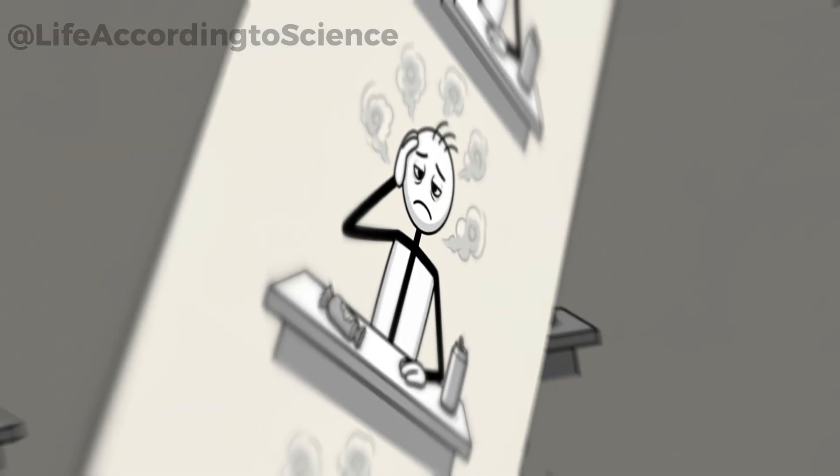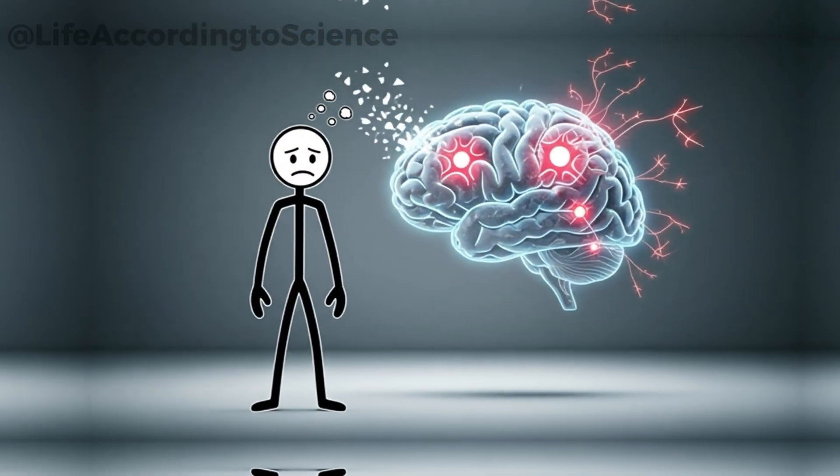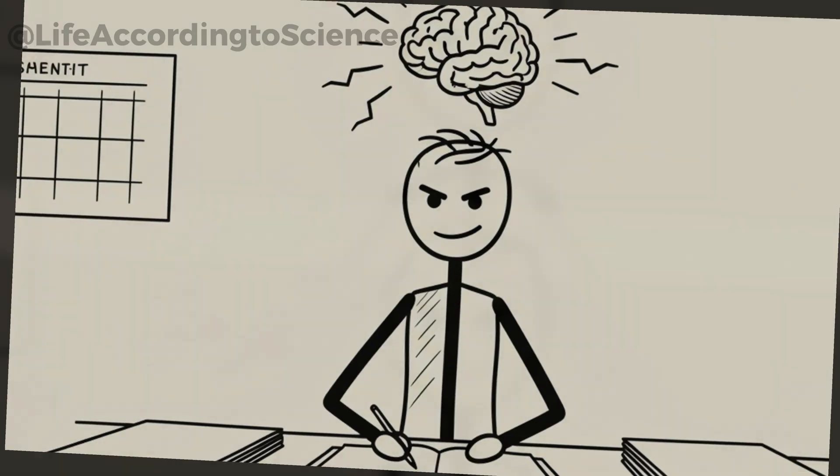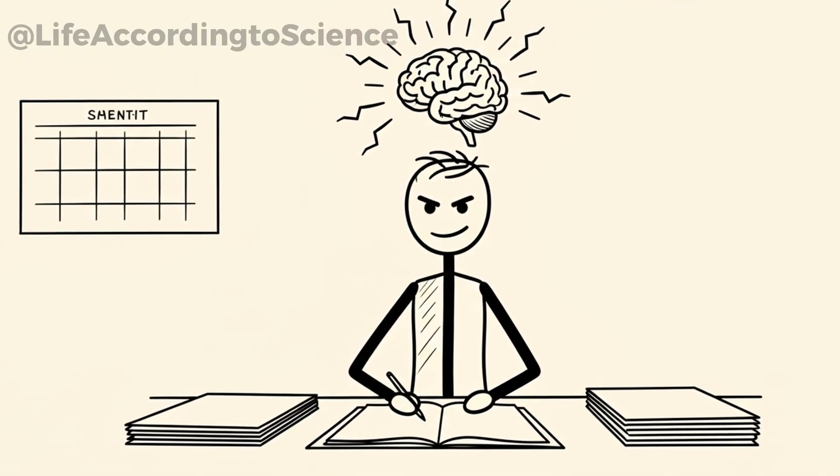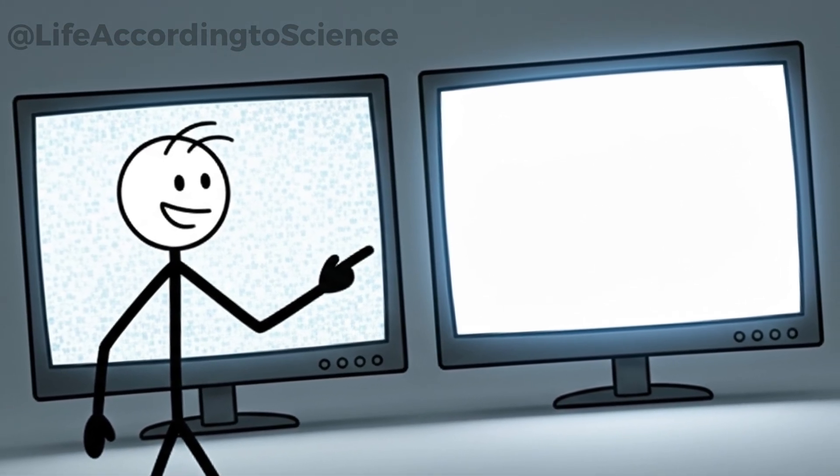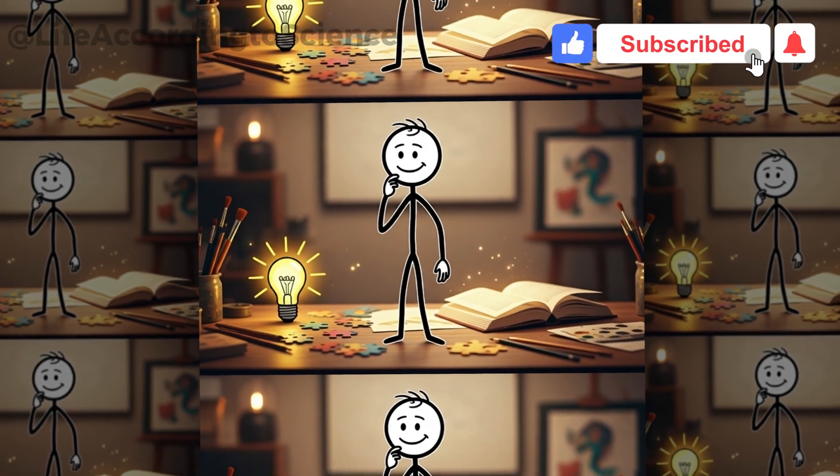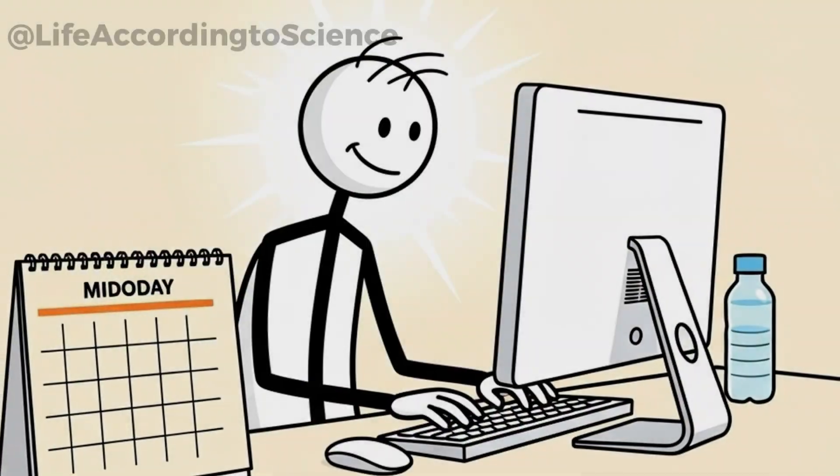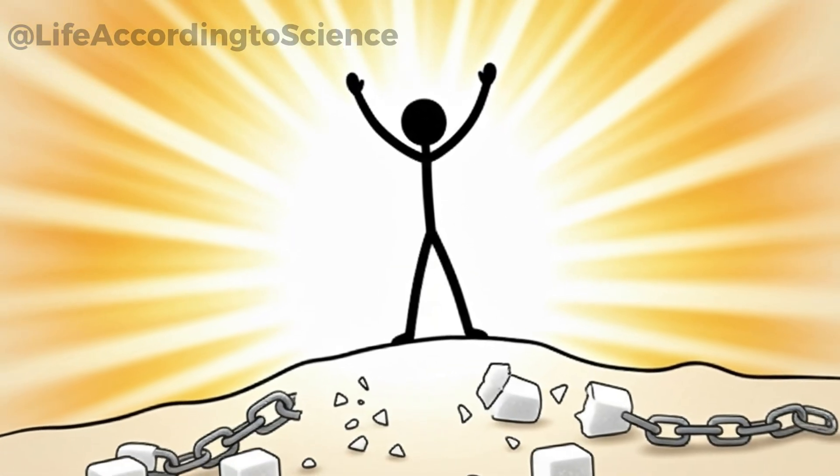Sugar fog is real. That sluggish, cloudy feeling you get after eating something sweet isn't just in your head. It's a chemical reaction. Excess sugar inflames the brain and disrupts neurotransmitters, leaving you distracted and unfocused. Once sugar is gone, many people report a dramatic boost in mental clarity. Tasks that once felt draining suddenly seem easier, and focus comes naturally. It's like switching from low resolution to high definition. Scientists call this improvement enhanced cognitive performance, but most people describe it simply as being able to think clearly again. Creativity, problem solving, and memory all improve when the brain isn't battling constant sugar spikes. Imagine powering through your day without that foggy crash after lunch. That's the mental freedom a sugar-free lifestyle unlocks.